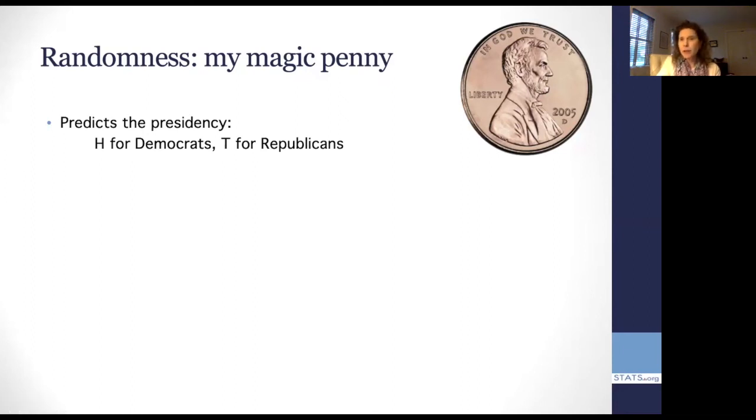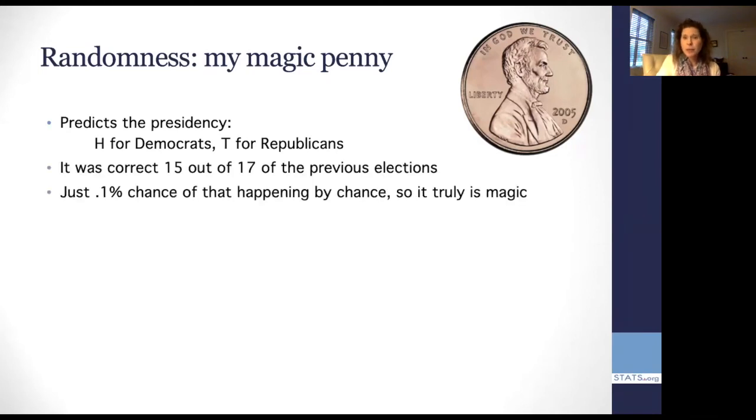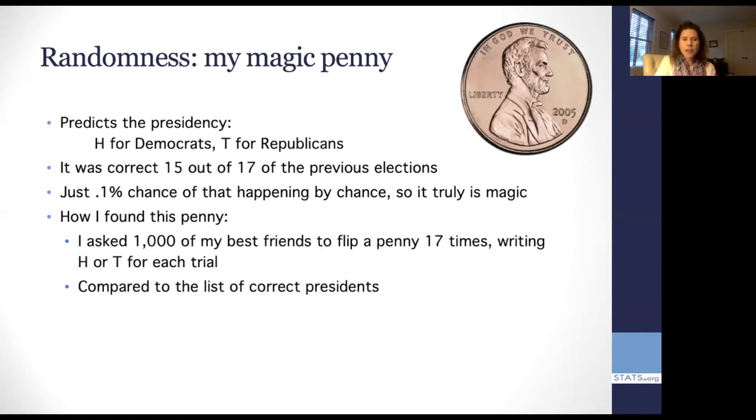So I have a magic penny and I flip it and it tells me who's going to win for president. It worked this time. I flipped it and I got a head for Democrats. It was in fact correct 15 out of the past 17 elections, which is really impressive. You should believe that my magic penny is in fact magic because there's only a 0.1% chance of that happening. And I'll tell you, I could publish in the best journals with that kind of result. So you should be very impressed. Now, of course you knew it was a penny. So you probably suspect that I'm some kind of charlatan, but I will tell you just a little bit about how I found my penny, which is that I went to a large lecture room. I took a thousand friends and I said, Hey everybody flip the penny 17 times. Just pull out a penny, flip it 17 times and write down H and T each time. Then compare that to a list of correct presidents who won each time. And then I'm going to go through and say, let's just pick the best coin out of all of these.